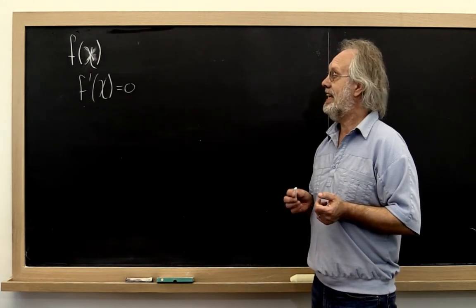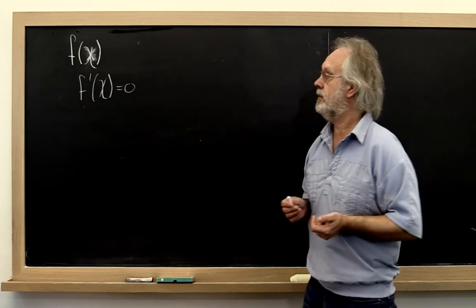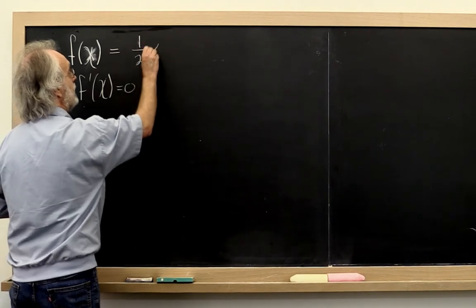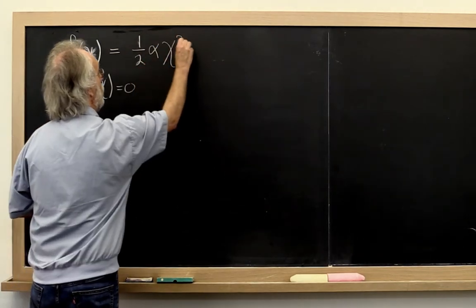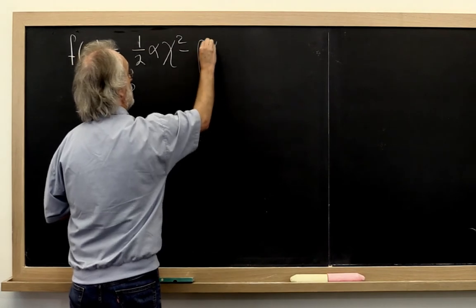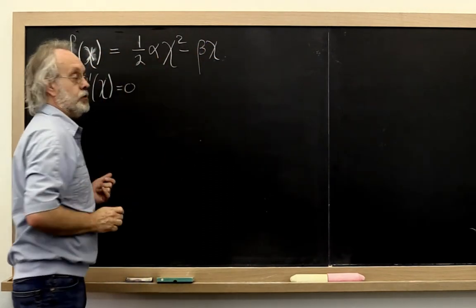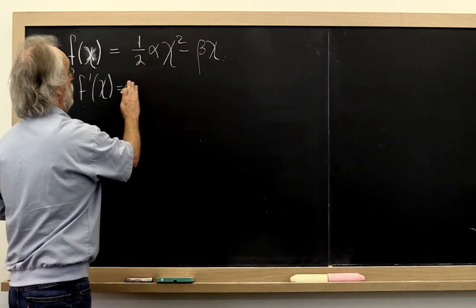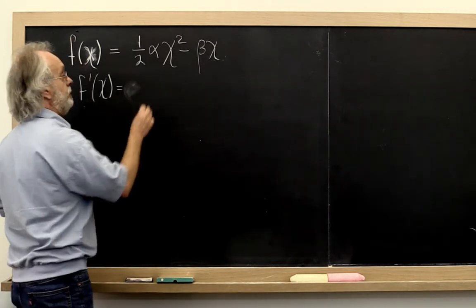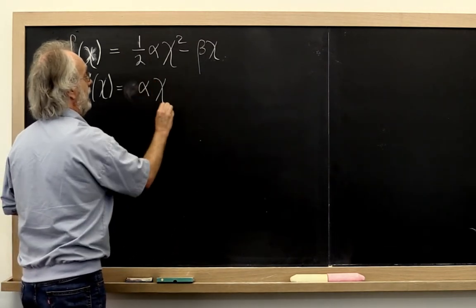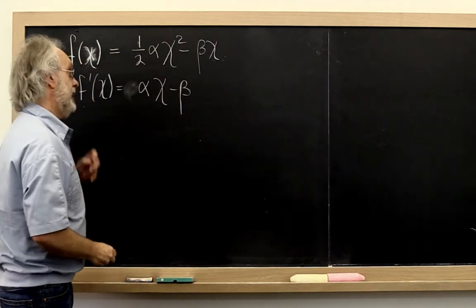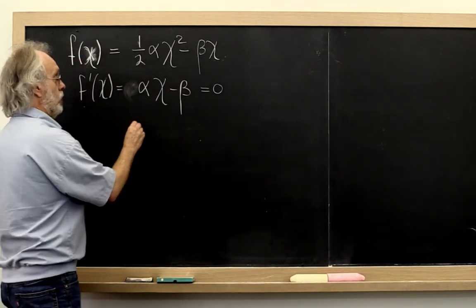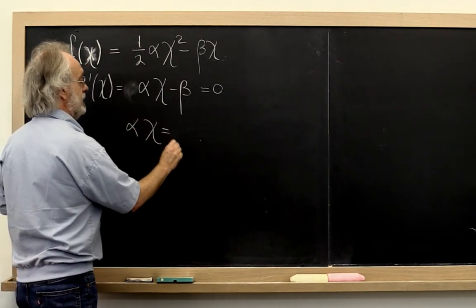Now if we pick that function carefully, in particular, if we pick this function to be the function 1 half times alpha times chi-squared minus beta times chi, where alpha, chi and beta are all scalars, then if we differentiate this, what we get is that its derivative is equal to alpha times chi minus beta. And if we then set that equal to zero to find out where the critical points are, what we find is that alpha times chi is equal to beta.